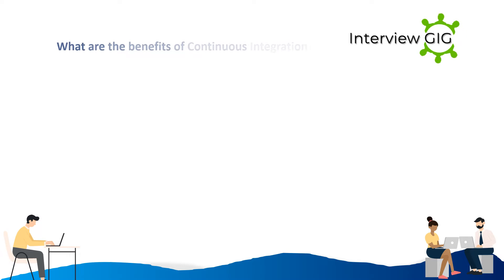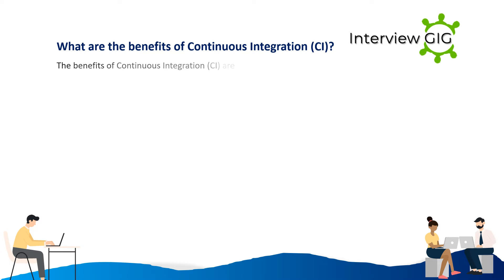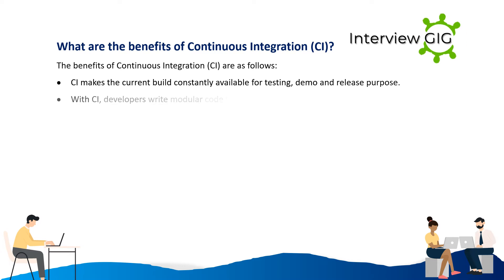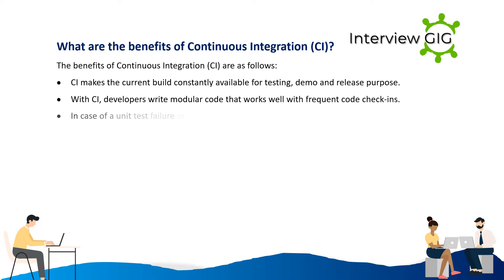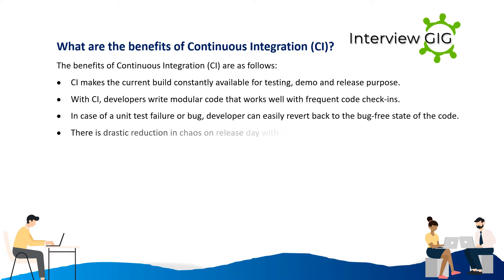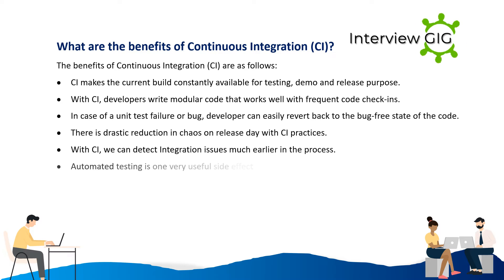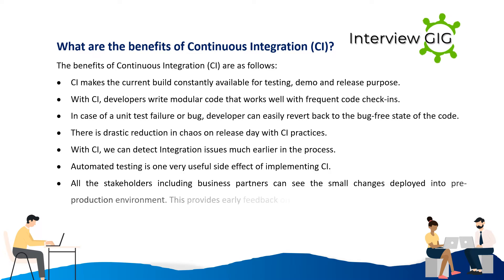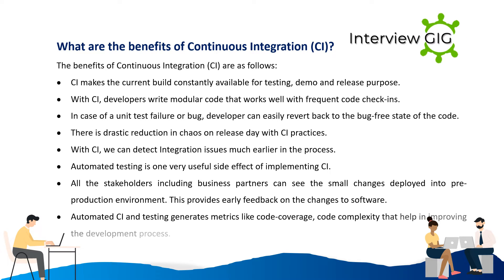The benefits of continuous integration are: CI makes the current build constantly available for testing, demo, and release. Developers write modular code that works well with frequent code check-ins. In case of a unit test failure or bug, a developer can easily revert to the bug-free state. There is a drastic reduction in chaos on release day. CI helps detect integration issues much earlier, and automated testing generates metrics like code coverage and code complexity that improve the development process. All stakeholders can see small changes deployed into pre-production, providing early feedback.